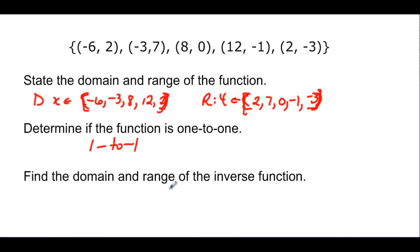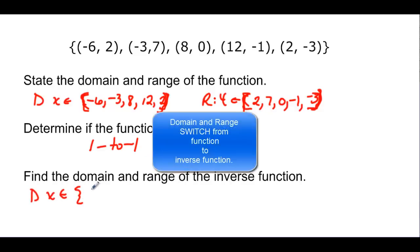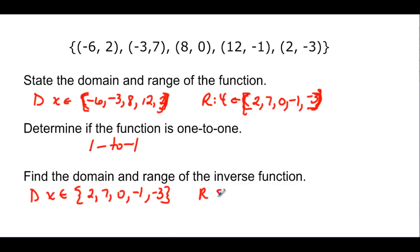And then it says find the domain and range of the inverse function. Well, the domain here, x is going to be an element, and this time I'll write it nicely. We'll just make it a set. It's going to be these range values because it switches. So we have {2, 7, 0, -1, -3}. And our range is going to be our domain of our function. So {-6, -3, 8, 12, 2}.